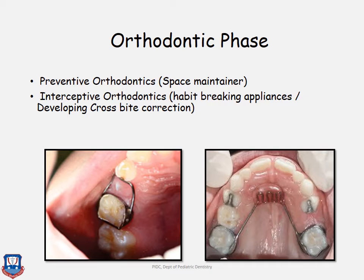In the first picture, a space maintainer has been given to retain the space available after extraction of a primary tooth, so the permanent tooth erupts without any problem. The second picture shows a habit breaking appliance given to the patient.